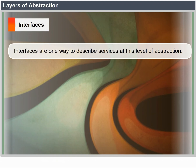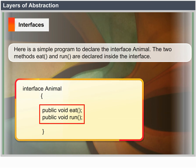We can understand this through a billboard advertisement which describes the services provided by a stack data structure. Interfaces are one way to describe services at this level of abstraction. Here is a simple program to declare the interface Animal. The two methods — eat and run — are declared inside the interface: Public void eat; Public void run.